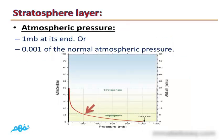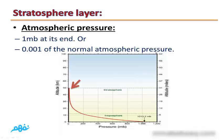Atmospheric pressure decreases with increasing height, until it reaches only 1 millibar at the Stratopause. This is equivalent to 0.001 of the normal atmospheric pressure, because if you divide 1 by the normal atmospheric pressure of 1013.25, you get approximately 0.001.